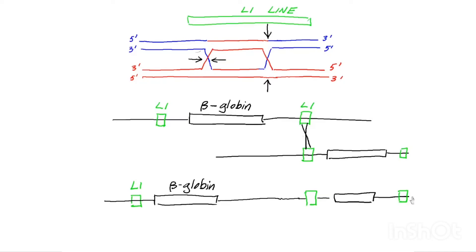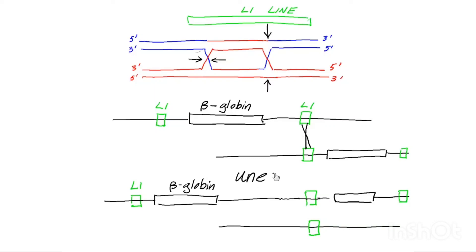And the lower chromosome will start over here, do the crossover, and come up here. As a result of that, you'll have a chromosome with only a single LINE element and no beta globin genes. So as a result of this unequal crossover, one chromosome now has two beta globin genes and the other chromosome has no beta globin genes. These are the products of what we call unequal crossover. You can see that this type of unequal crossover can lead to a chromosome with no beta globin genes.